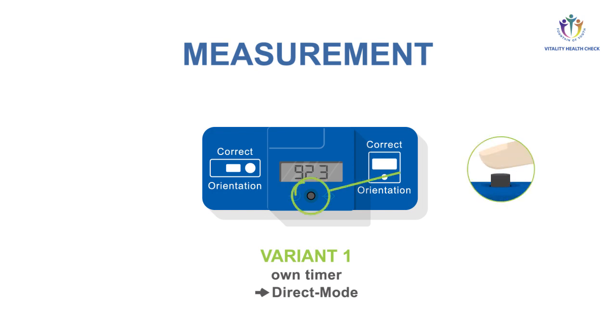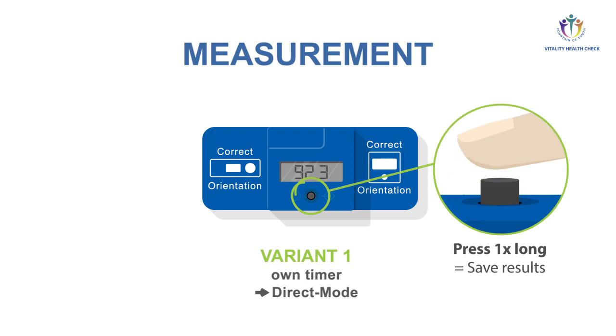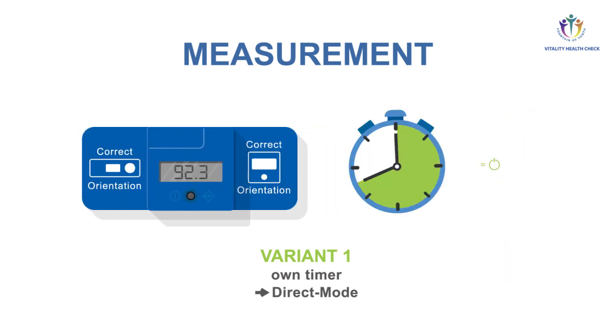Results can be saved by a long press of the button. The VHC reader turns off after 50 seconds. In timer mode, results are saved automatically.